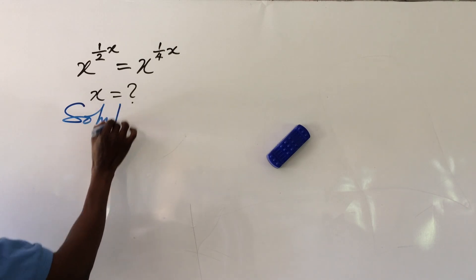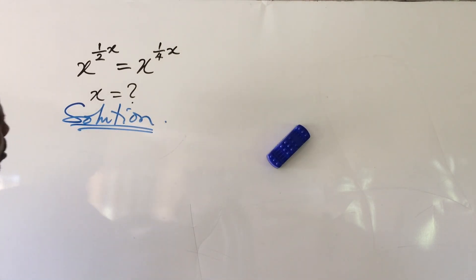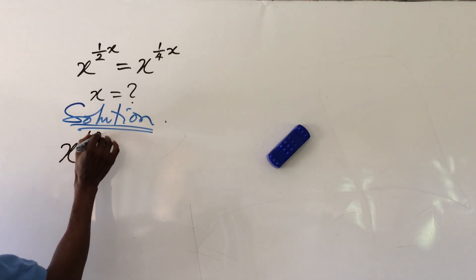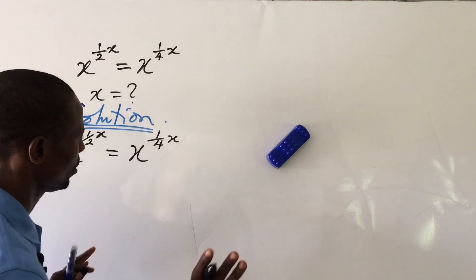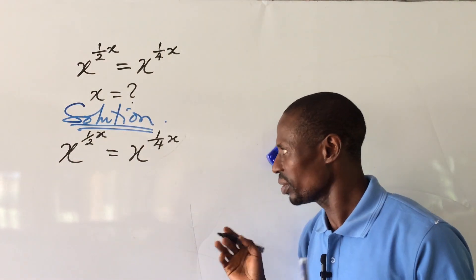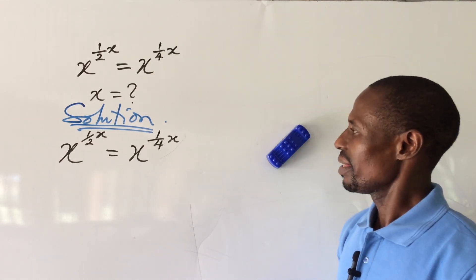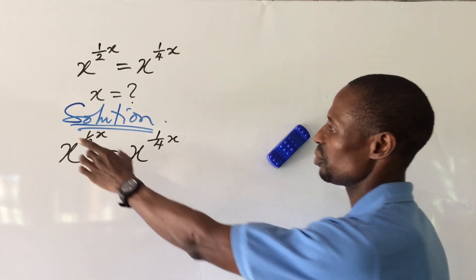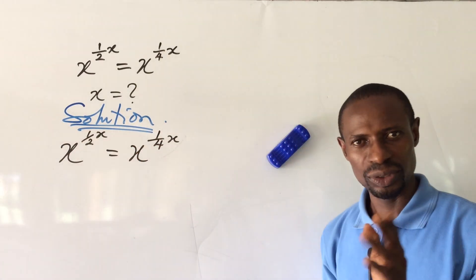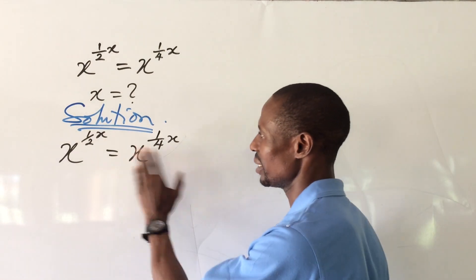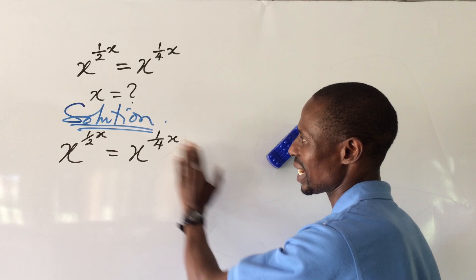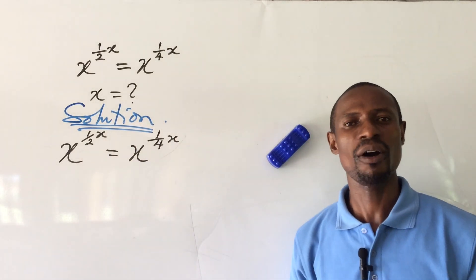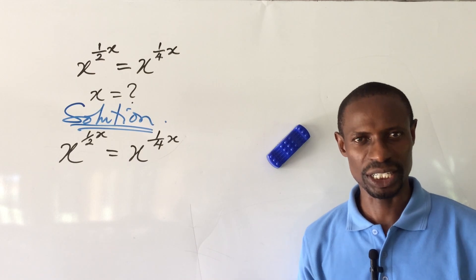Let's go to the board now and take our solution. We put down our equation: x to the power of one all over two of x, equal to x to the power of one all over four of x. Now, look at one of the challenges faced by mathematicians — because the bases are the same, you may be tempted to equate the exponents. If you do that here, you will fail. So how do you handle this? Send the quantity on the right hand side to the left hand side of the equation.